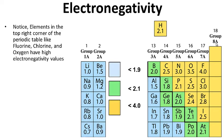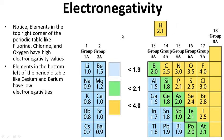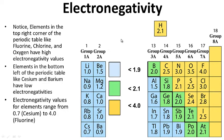Notice on our periodic table: elements in the top right corner, like fluorine, chlorine, and oxygen, have high electronegativities — they hog electrons and therefore have high electronegativity values. Elements in the bottom left of the periodic table, like cesium and barium, have low electronegativity values. Electronegativity values for elements range from 0.7 for cesium all the way up to 4 for fluorine.